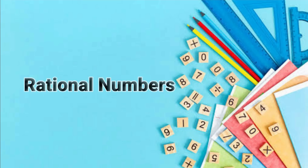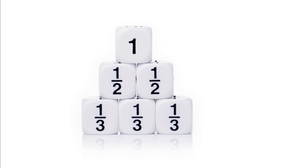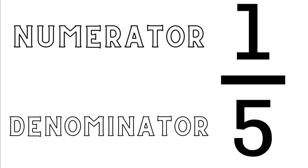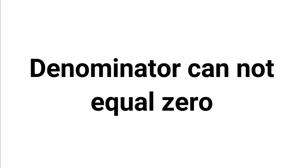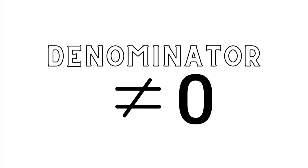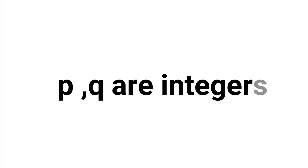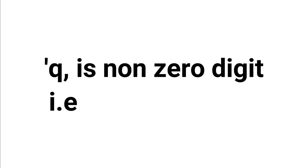Let's talk rationally about the rational numbers. A rational number is any number that can be written as a fraction where both the numerator and denominator are integers and the denominator cannot equal zero. We can represent this algebraically as p divided by q, where p represents an integer and q is a non-zero number.